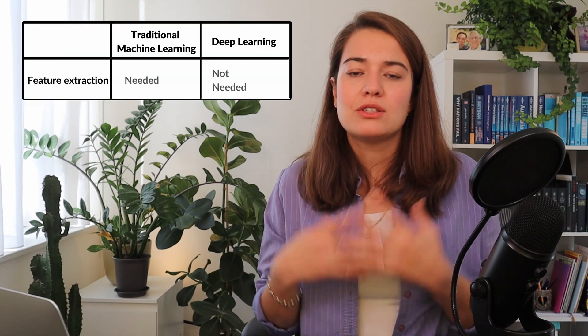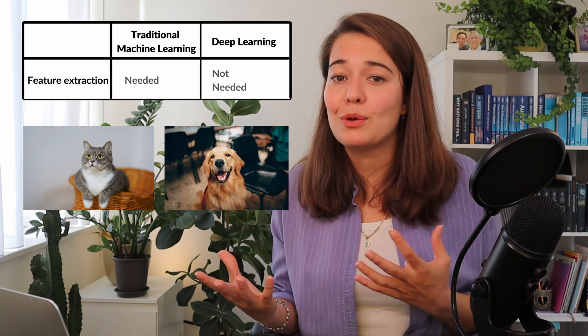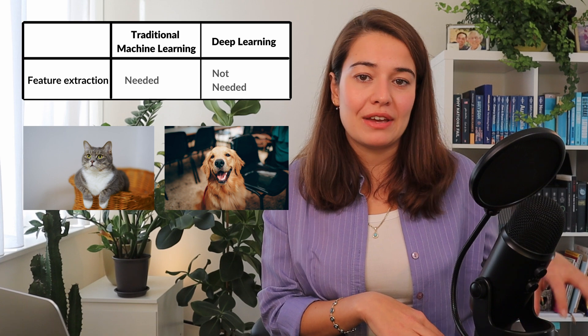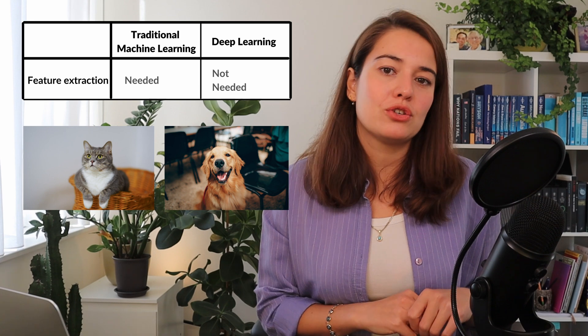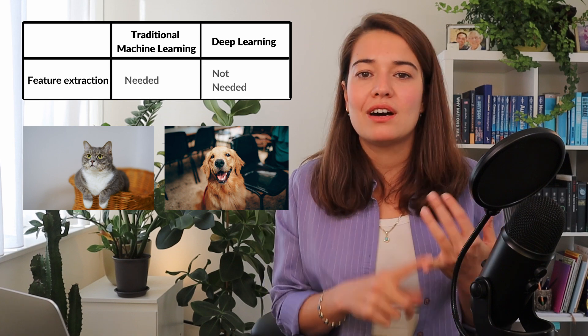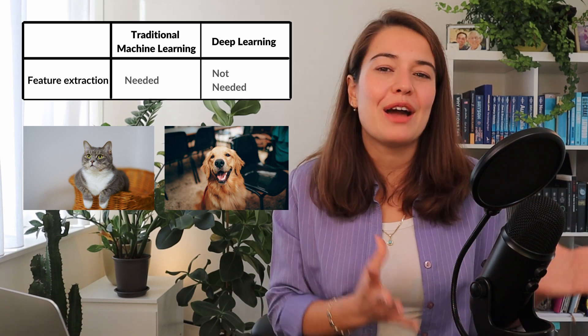So let's look at how they're different. The first and most prominent difference is that when you are training traditional machine learning algorithms, you need features extracted from the data manually, whereas when you're doing deep learning training, you don't have to do that. For example, let's say you're trying to classify cats or dogs. When you want to train your model to understand if a given picture is of a cat or a dog, you have to extract features such as how many pointy ears it has, what the nose looks like, what color the nose is, or what pose the animal is giving.